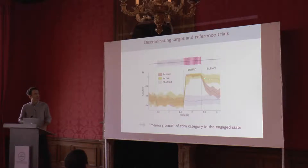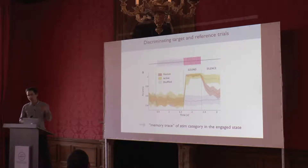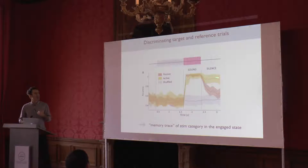The classifier output gives us classification accuracy as a function of time. Before the stimulus comes on, we're basically at chance level. But as soon as the stimulus comes on, the discrimination accuracy is very high — and it's very high both in the passive and in the active state. So although the click-evoked responses go down in the active state, the discrimination is still very high. If we continue and try decoding after the stimulus, we see a big difference between passive and active: in the passive case, the discrimination decreases pretty quickly, while in the active state, even when the stimulus is not on anymore, we can still discriminate whether the previous stimulus was a go or a no-go stimulus. There seems to be a kind of memory trace of the stimulus meaning — and this is the auditory cortex.